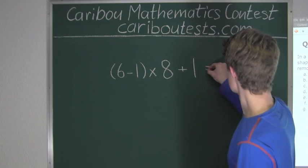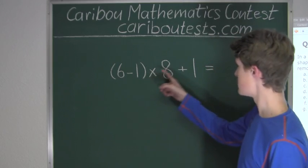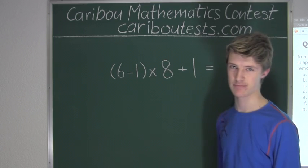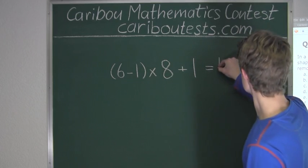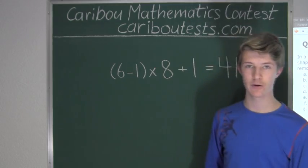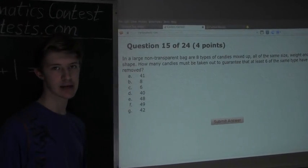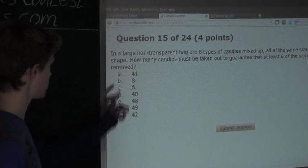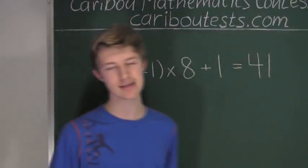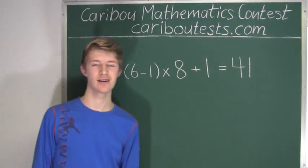6 minus 1 is 5, 5 times 8 is 40, and 40 plus 1 is 41. Therefore 41 candies must be taken out to guarantee that at least 6 of the same type have been removed. So the answer is A, 41. If you'd like to know more about this contest, please visit our website at cariboutests.com. Thank you.